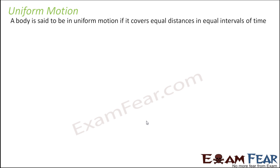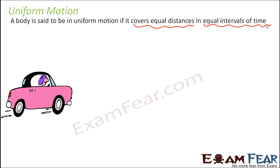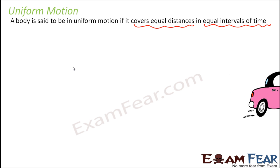So what is uniform motion? Uniform means something which happens smoothly, very regularly. A body is said to be in uniform motion if it covers equal distances in equal intervals of time. So what it means is, let us say this is a car and this car is moving uniformly — for every interval of time, it is covering the same distance.